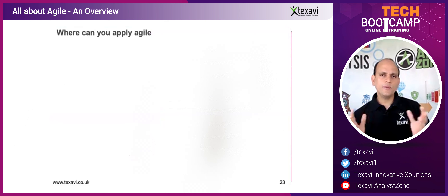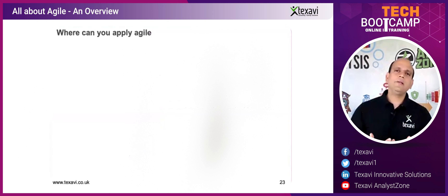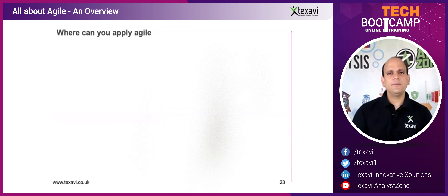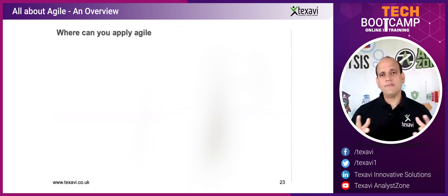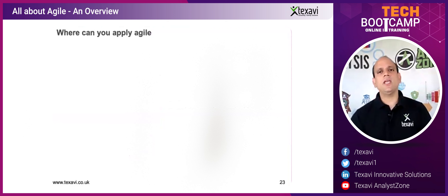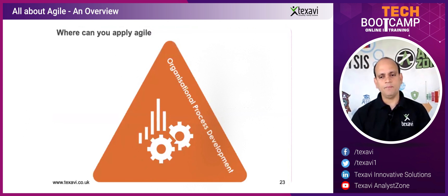So where can you really apply agile? As we discussed yesterday, agile can be applied in the context of a business, it could be in the context of technology, it could be in the context of our own life. Everything is about change — how we can manage change, how we can try and support ourselves in preparing for it.